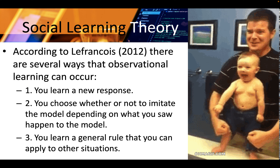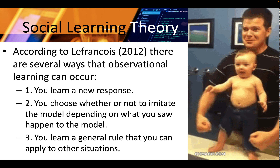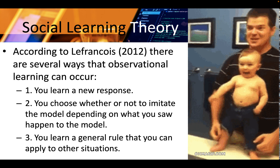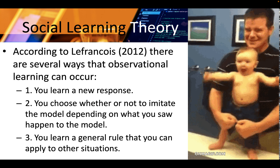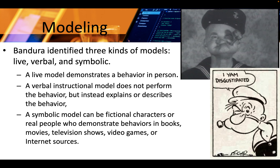According to LaFrancois in 2012, there are several ways that observational learning can occur: you learn a new response, you choose whether or not to imitate the model depending on what you saw happen to the model, and you learn a general rule that you can apply to other situations. Bandura identified three kinds of models: live, verbal, and symbolic. A live model demonstrates a behavior in person. A verbal instructional model does not perform the behavior but instead explains or describes it. A symbolic model can be fictional characters or real people who demonstrate behaviors in books, movies, television shows, video games, or internet sources.